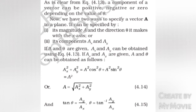Now we have two ways to specify a vector A in a plane. It can be specified by: one, its magnitude A and the direction theta it makes with the x-axis, or two, its components AX and AY. If A and theta are given, AX and AY can be obtained using equation 4.13. If AX and AY are given, A and theta can be obtained as follows: AX² + AY² = A² cos²θ + A² sin²θ = A², so A equals root of AX² plus AY², and tan theta equals AY over AX, which implies theta equals tan inverse of AY over AX.